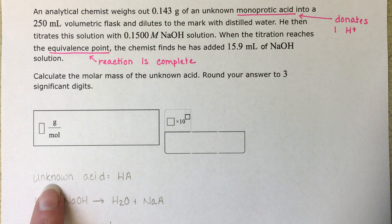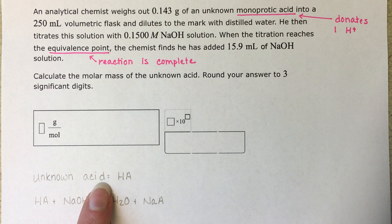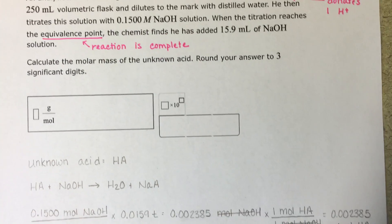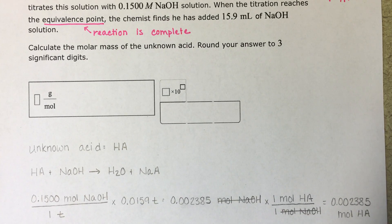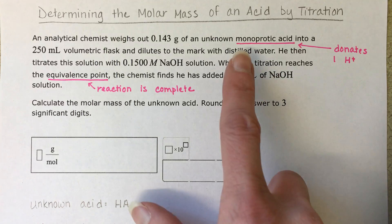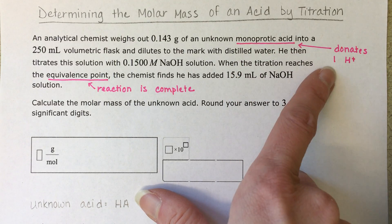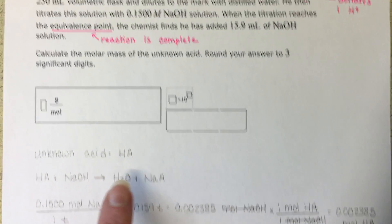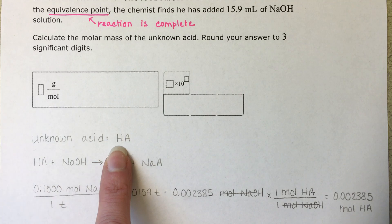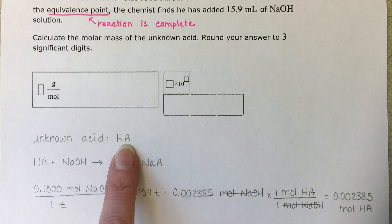What we're going to do is call our unknown acid H-A. That is a generic abbreviation that chemists use for acids. We know that it's a monoprotic acid and only has one hydrogen, so we write a formula with just one hydrogen — H — and then A just stands for acid.